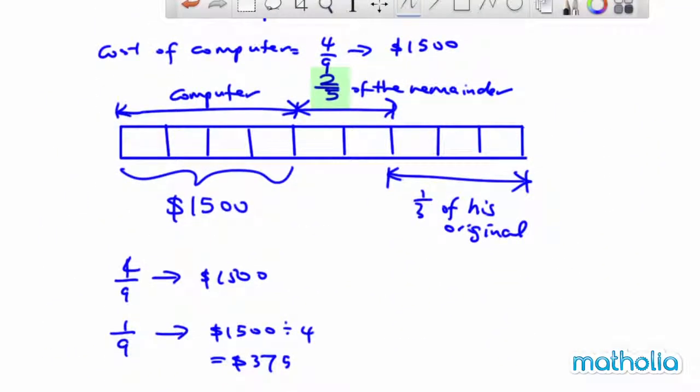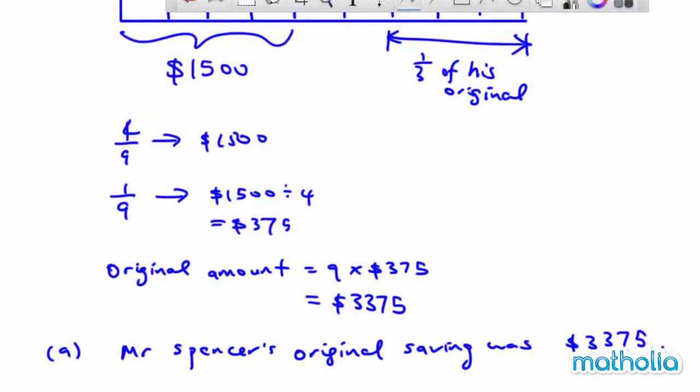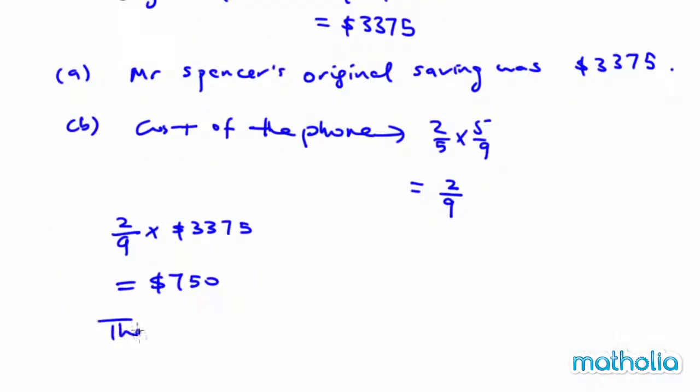Now, you can see the phone is 2-fifths, right? So, the cost of the phone is 750.